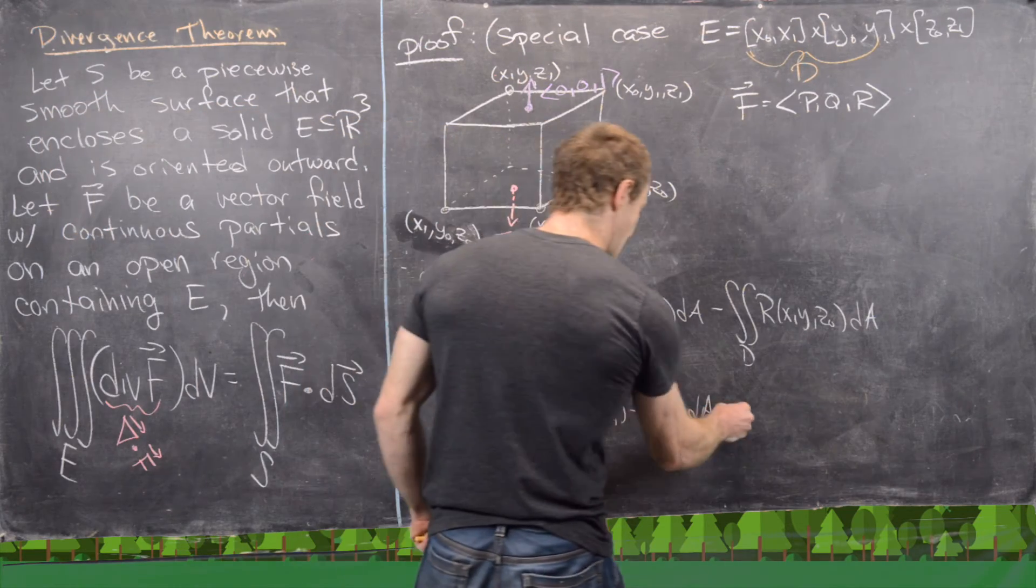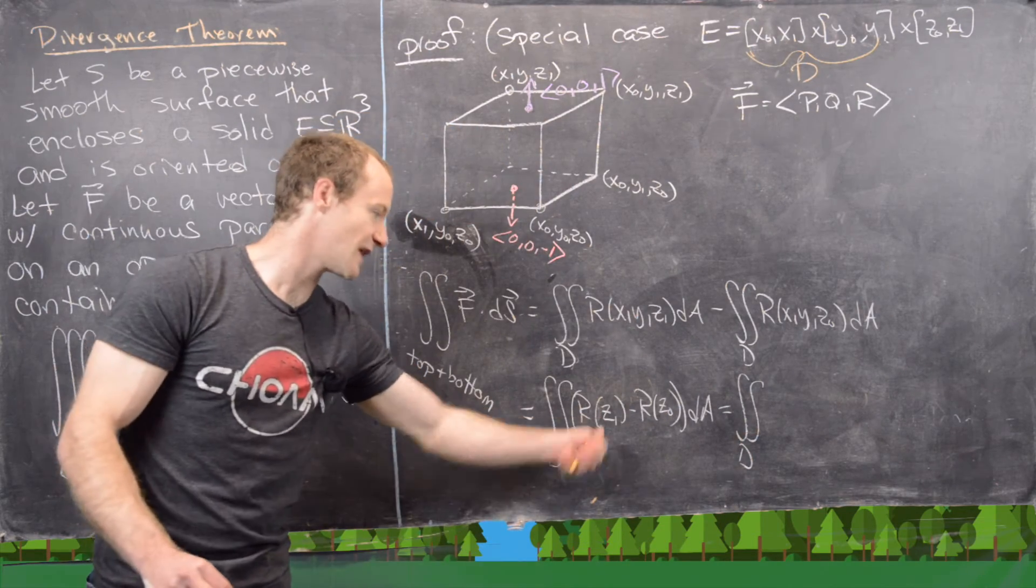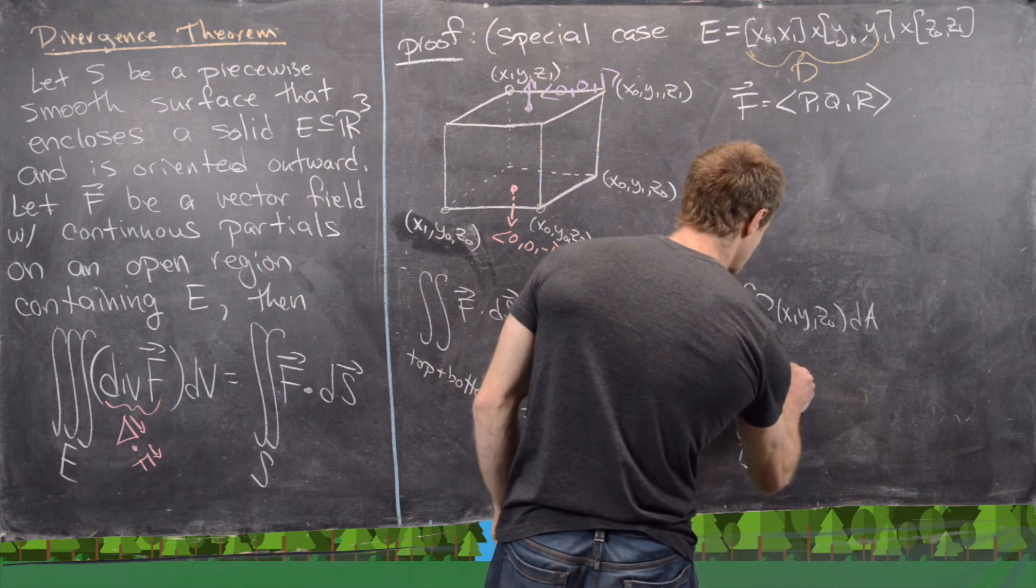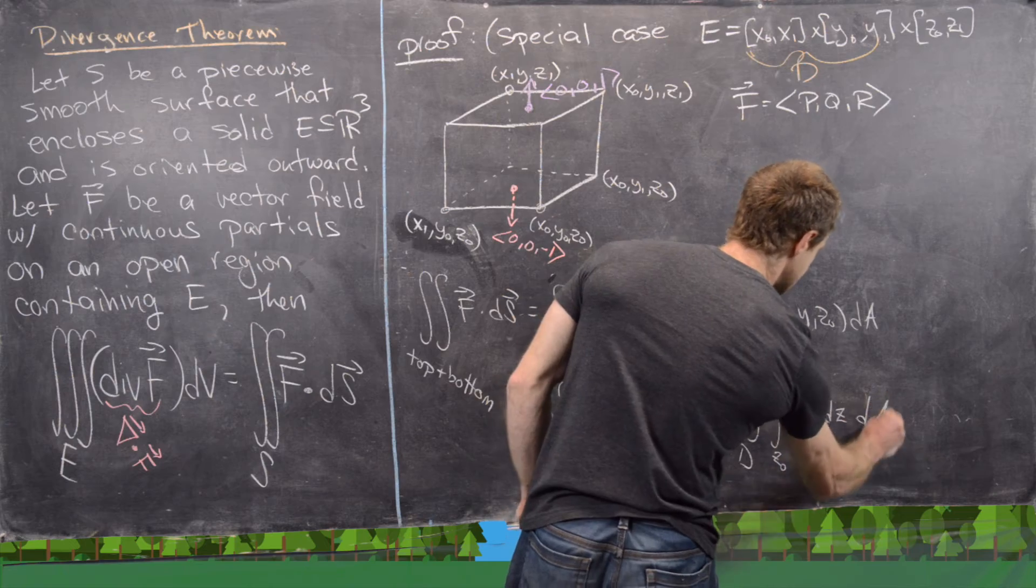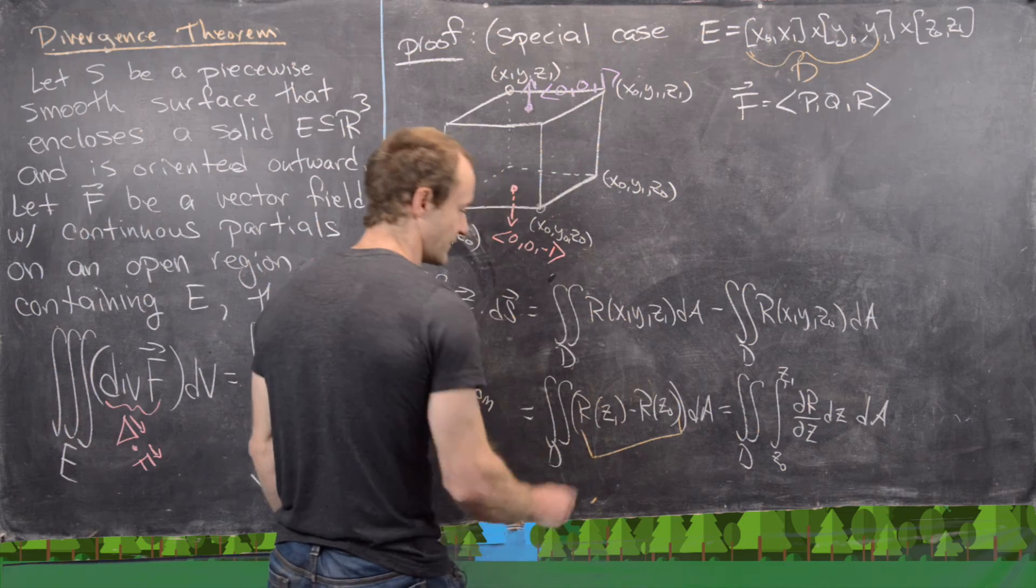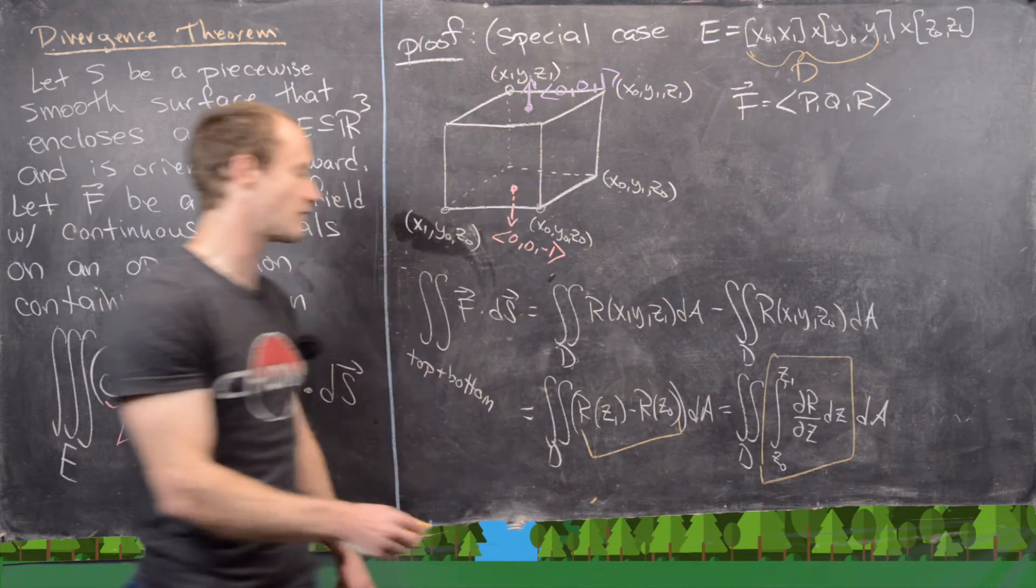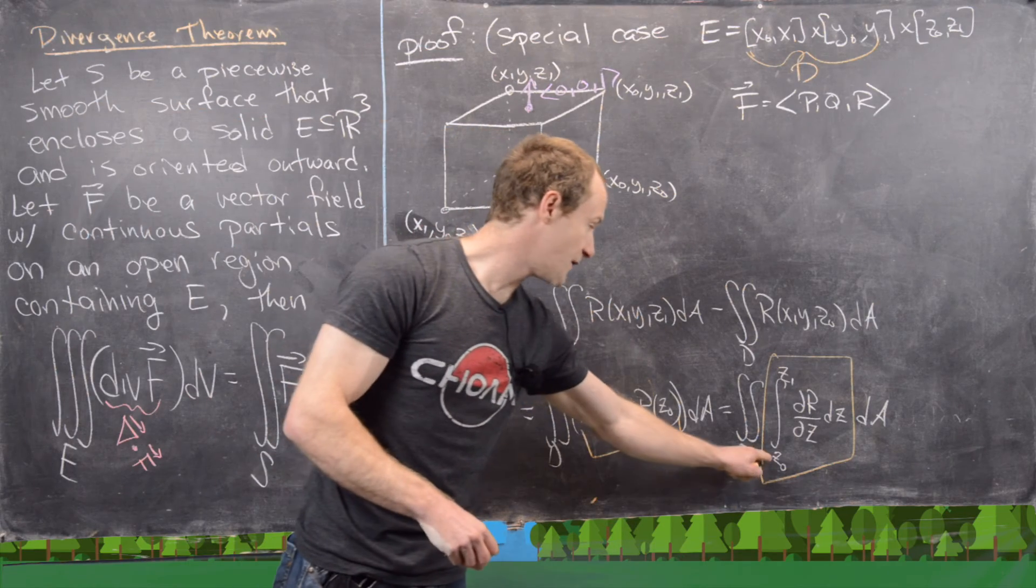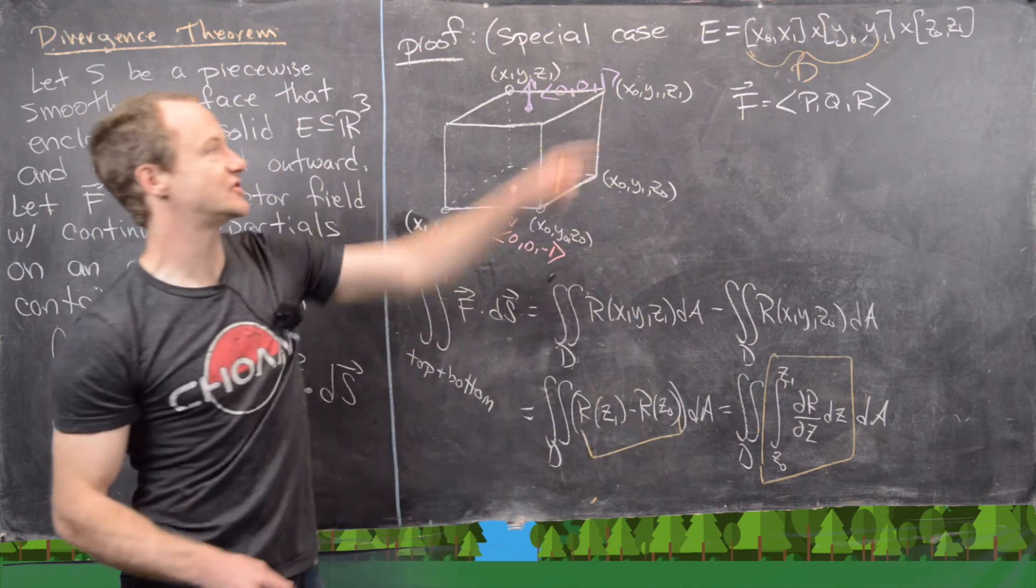But then notice that this is exactly equal to the double integral over D, but I can replace that with a single integral, and that single integral will be from z₀ to z₁ of the partial of r with respect to z, dz, and then dA. Where what I've done here is I've used the fundamental theorem of calculus part one, in other words from calculus one, to rewrite that yellow underline to that guy right there.